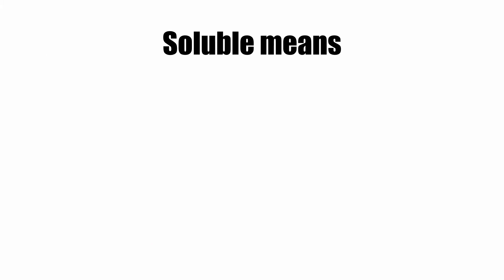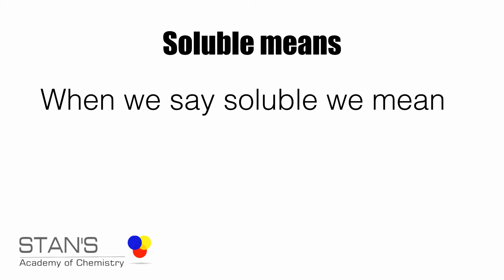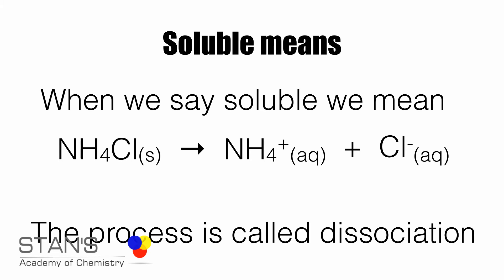Let's define the term soluble. When you say something is soluble in water, this is what you will mean. Let's take ammonium chloride. It's a white crystalline solid and if you put it in water, it disappears. When it disappears, what we say is, it has dissolved in water. So the process is called dissociation.